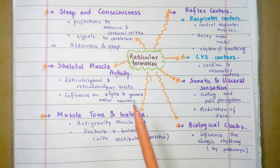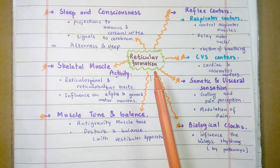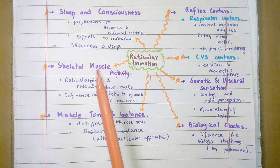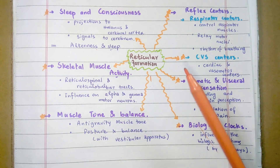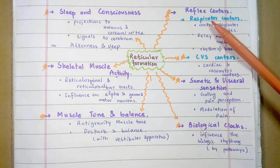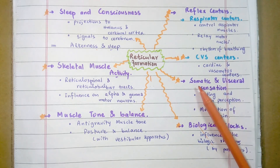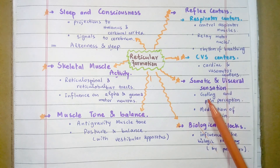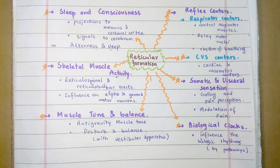These are the functions associated with the reticular formation: it has a role in sleep, consciousness, skeletal muscle activity, muscle tone and balance of the body. It has reflex centers including respiratory and cardiovascular centers, and has a role in somatic and visceral sensations along with biological clocks. These are all the functions of the reticular formation. Thank you very much.